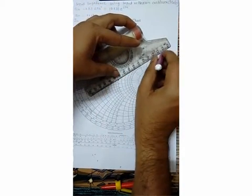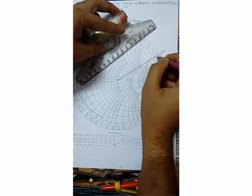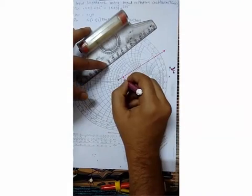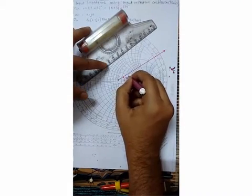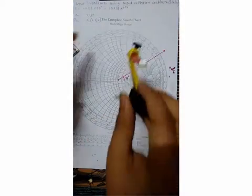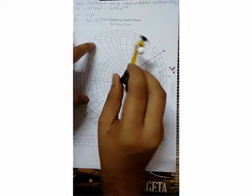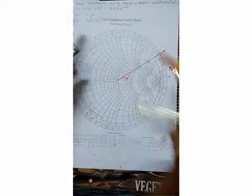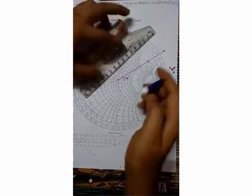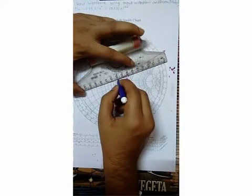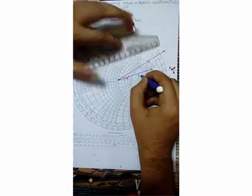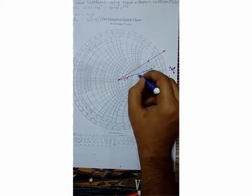After extending, you got this 34-degree angle. Now you have measured this 0.83, just plot it here. You can see this is your gamma_in value.